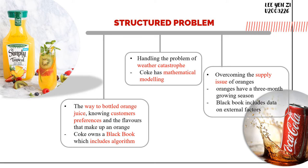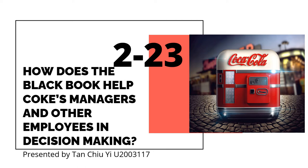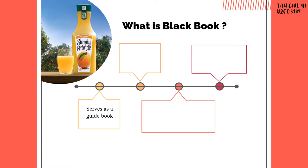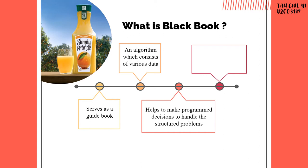Now I will pass to the next presenter, Tan Chiu Yee. Thank you. I'm Tan Chiu Yee. Let me continue with question two: how does the Black Book help Coke's managers and other employees in decision making? What is the Black Book? The Black Book serves as a guide book to help managers and employees in the decision making process. It is an algorithm which consists of various data. It has detailed data about more than 600 flavors that make up an orange juice, customer preference profiles of acidity and sweetness rates of raw juice, and also includes data about external factors which are weather patterns, crop use, and cost pressure. All of this data is important to help in decision making.